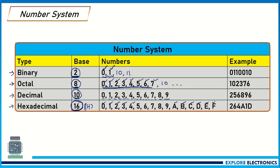The base is 16, and we represent it with H — but H is not a number in hexadecimal; it indicates that the number is hexadecimal. Binary numbers have combinations of zeros and ones. Octal numbers use combinations of 0 to 7. Decimal uses 0 to 9. Hexadecimal uses 0 to 9 plus A to F.